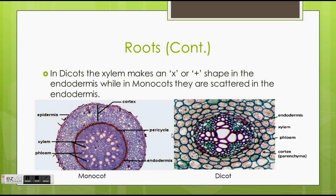In dicots, the xylem makes an X or a plus shape in the endodermis, while in monocots, they are scattered in the endodermis.